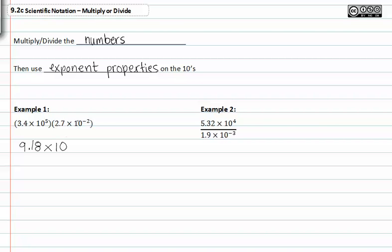Multiplying bases means we add the exponents, and we get as our final answer 9.18 times ten to the third.